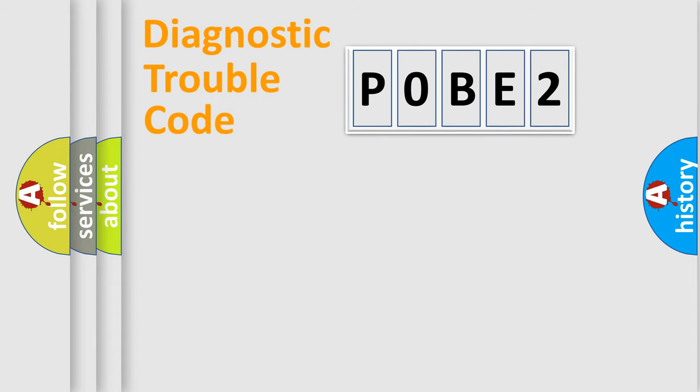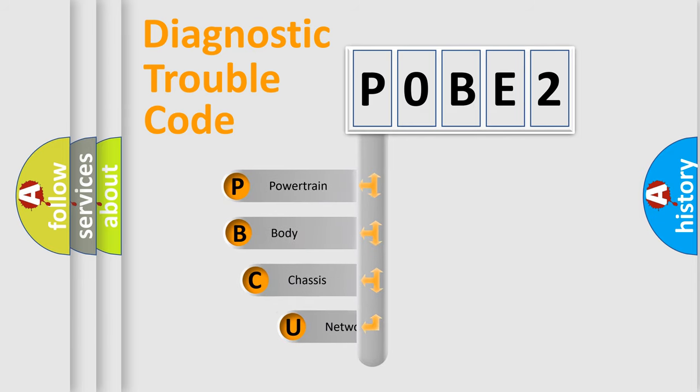First, let's look at the history of diagnostic fault code composition according to the OBD2 protocol, which is unified for all automakers since 2000. We divide the electric system of automobile into four basic units.